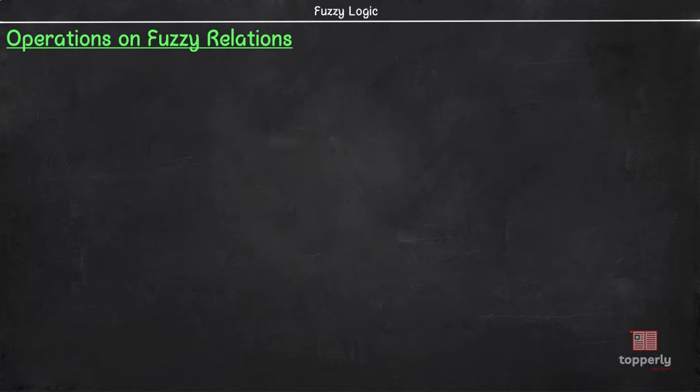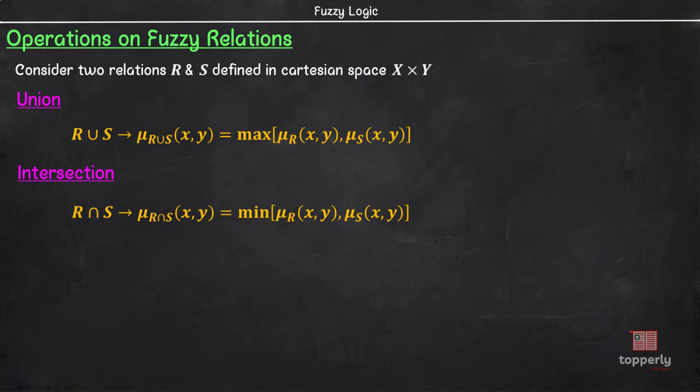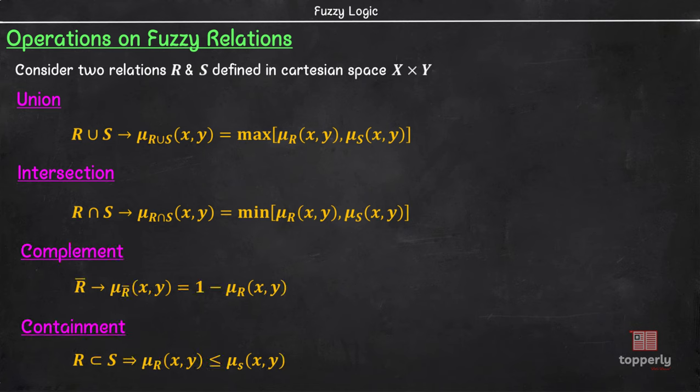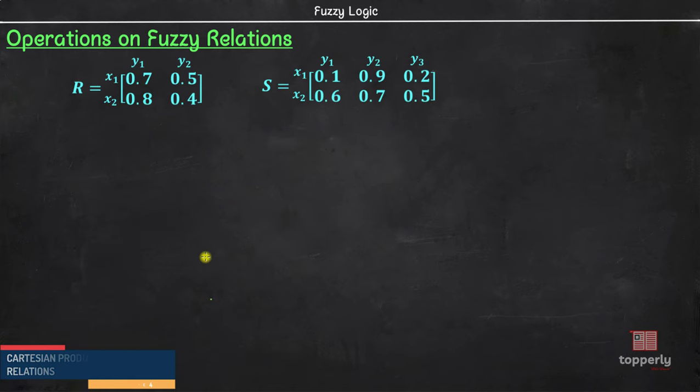Next, we have operations on fuzzy relations. Let R and S be fuzzy relations on the Cartesian space x cross y. Then, we can define the operations union, intersection, complement and containment in the similar way we define for crisp relations. Since we have already discussed these while we learnt crisp relations in lecture 4, I am not repeating the same here. Instead, let us understand the operations through an example. Consider two relations R and S defined in x cross y as shown here. Here, S has also y3 in the relation.